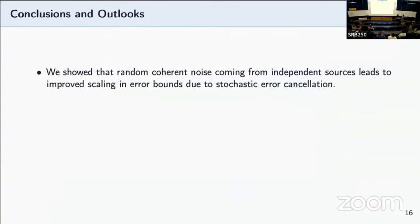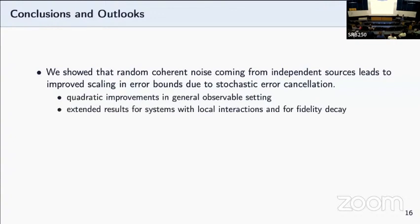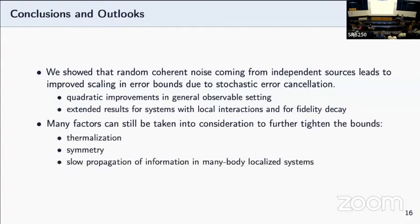So in summary, we showed that under this assumption that each qubit has a random or stochastic noise coming from independent sources, we're able to show improved scaling in error bounds because of the error cancellation properties. Specifically, we showed quadratic improvement in the general observable setting and extended results for systems with local interactions and for fidelity decay. Some future directions to further tighten the bounds include thermalization. When the system thermalizes, the state converges to some fixed point, which means the error would accordingly eventually converge to some very small value as well. For systems with symmetry, we can also more easily detect errors. Lastly, in many-body localized systems, the Lieb-Robinson bound actually isn't very tight because it has a slower propagation of information. So for this specific case, we can also further tighten the bound.